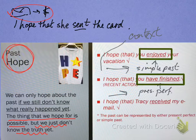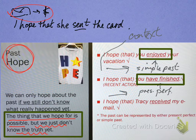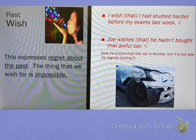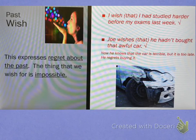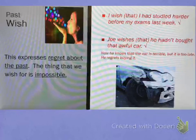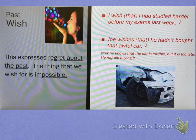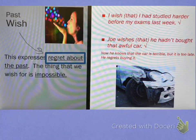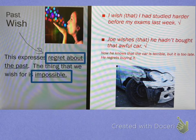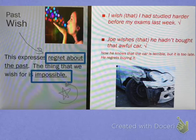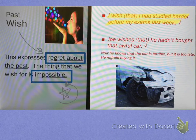So, past hope: the thing that we hope for is possible — we just don't know the truth yet. Let's go on to past wishes. When we talk about past wishes, we're talking about things that there's a certain amount of regret about. This is the key idea about past wishes — we express regret about the past, and the thing that we wish for is impossible. This is really important. So let's look at the examples: 'I wish that I had studied harder before my exams last week.'